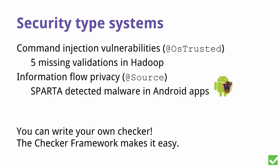We've also built type systems for security — including ones for command injection vulnerabilities when you use user-supplied data in a command line; we found five missing validations in Hadoop. And one for information flow privacy that detected malware in Android apps. You probably just want to use ones that people have already provided — it ships with 20, there are dozens more that others have written you can download. You can also build your own; the checker framework makes that pretty easy, even for a research type system.